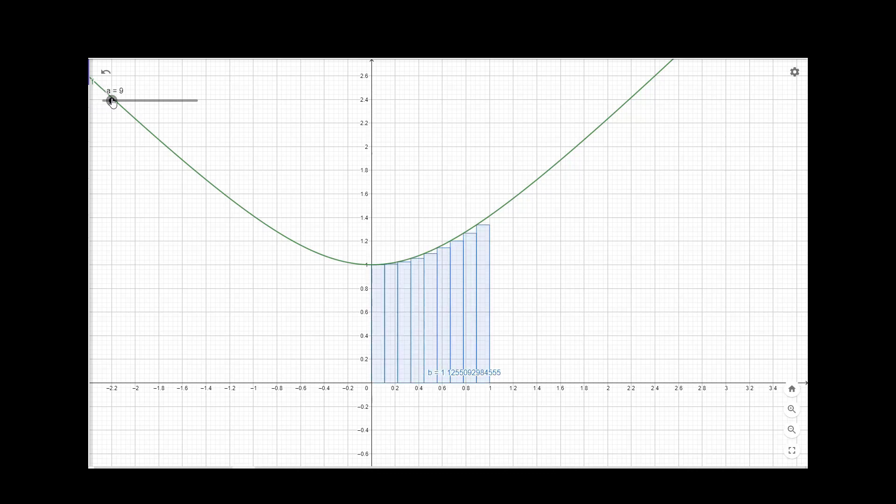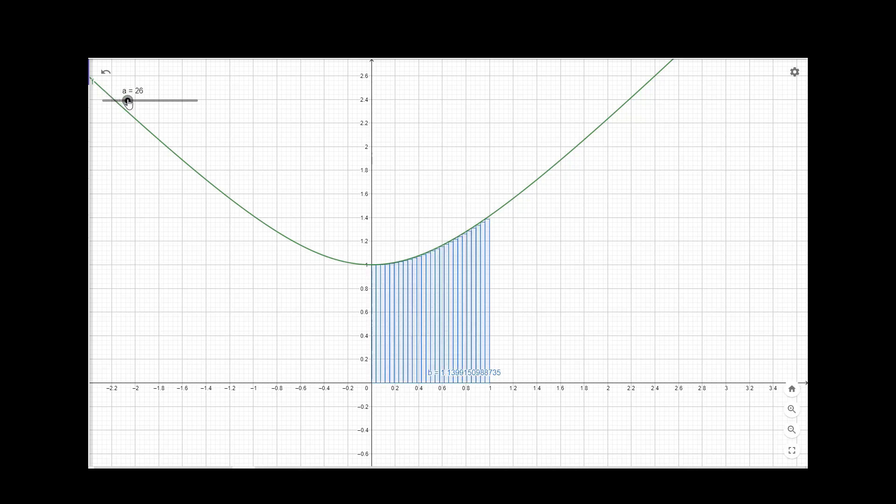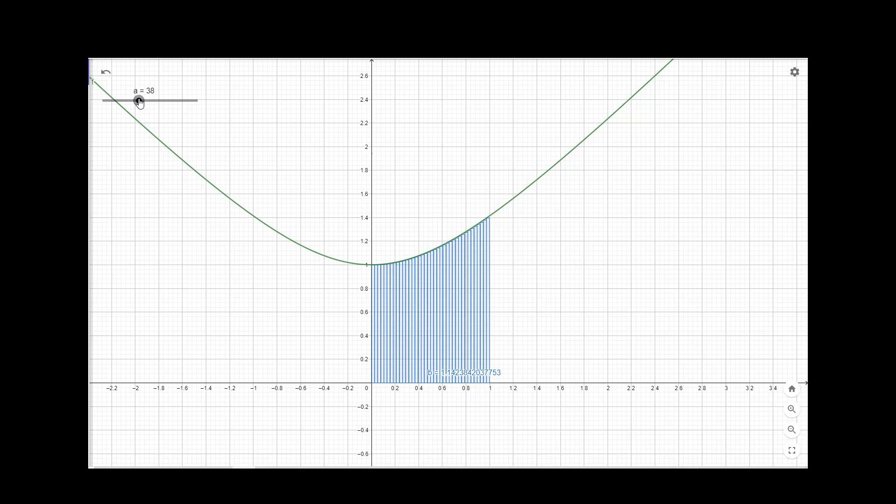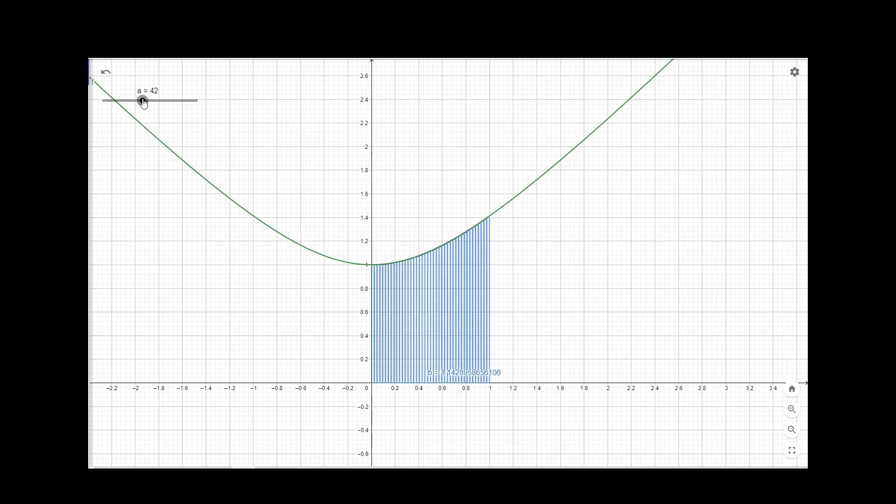As the number of sub-intervals increases, you can see that the area which we are calculating, the Riemann sum, is actually approaching the actual value of the integration ∫f(x)dx from 0 to 1. So that is the area under the curve bounded by the x-axis.